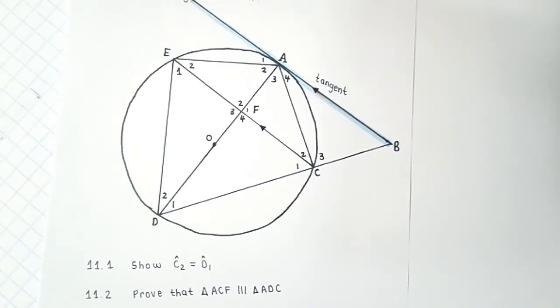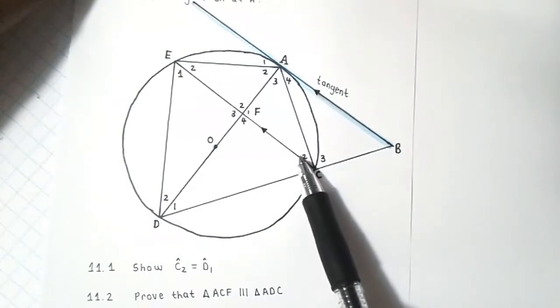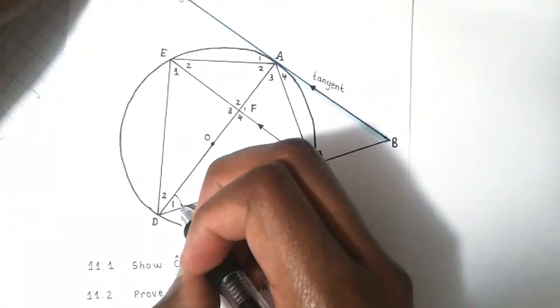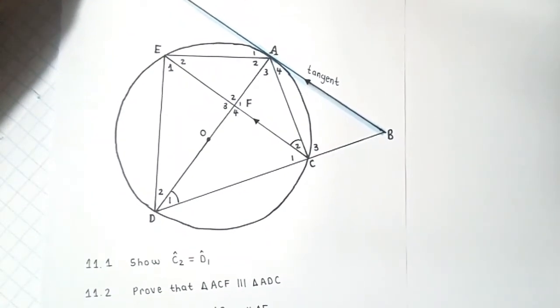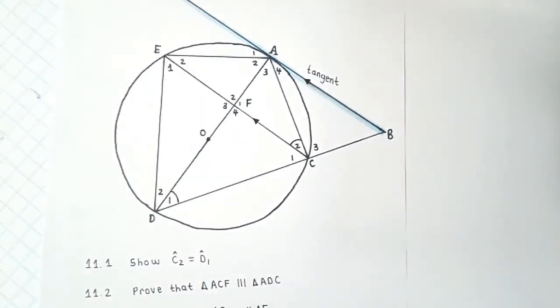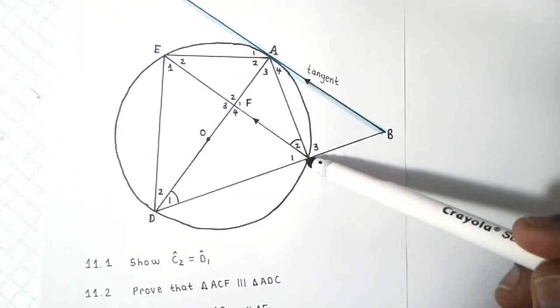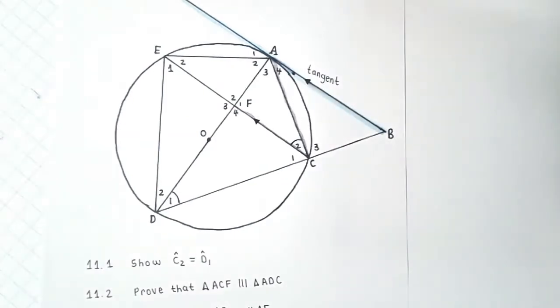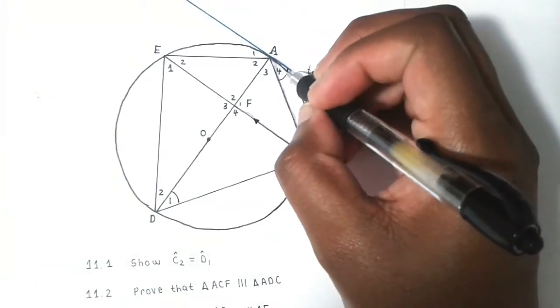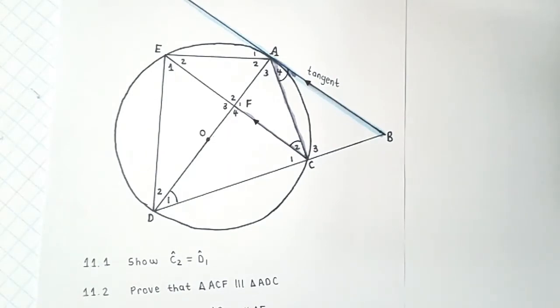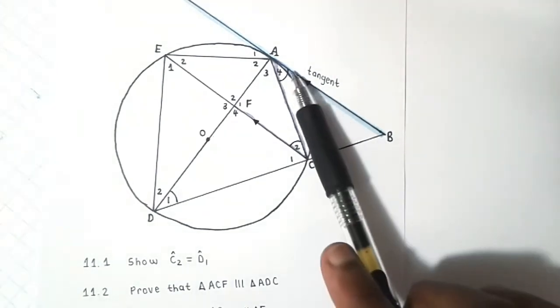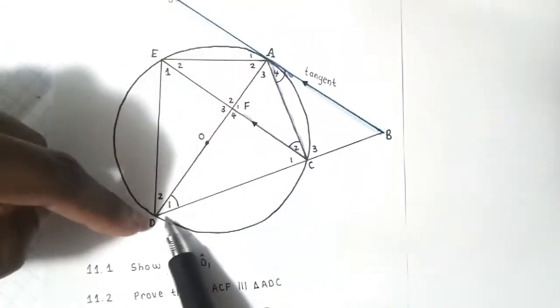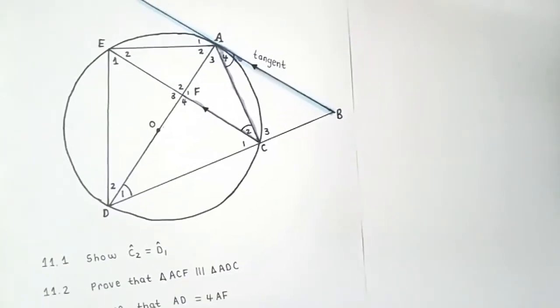First question simply wants us to show that angle C2, this angle here, angle C2, we want to show that is equals to angle D1. So if we quickly trace back angle C2, I think the parallel lines are going to work in our favor here. I can see that angle C2 is alternate with angle A4. So angle C2 is alternate with angle A4 forming a Z shape over there, and at exactly the same time since angle A4 is an angle between our tangent and the chord AC, by the tan chord theorem, remember we can then conclude that that angle is equals to angle D1, the angle in the alternate segment.